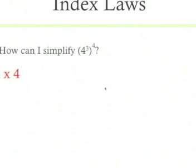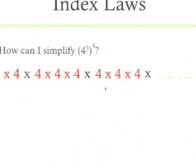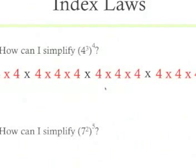One last example: (4^3)^4 is simply this. You've got 4 cubed, four times. 3 times 4 equals 12, and you end up with the answer being 4^12. So that's quite simple.